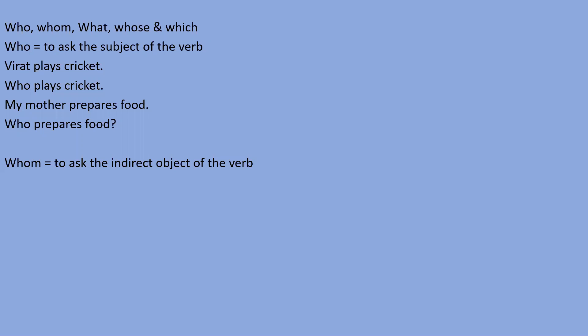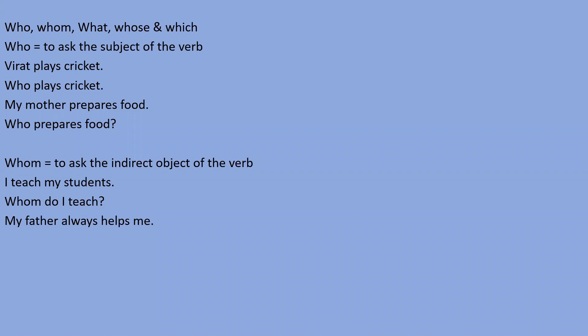Whom is used to ask about the indirect object of the verb. The indirect object is a living being that receives the action. For example, 'I teach my students' — my students are the indirect object. So I ask: 'whom do I teach?' Answer: I teach my students. Another example: 'my father always helps me' — me is the indirect object, so we ask 'whom does your father help?'